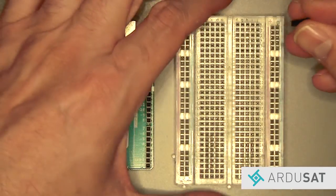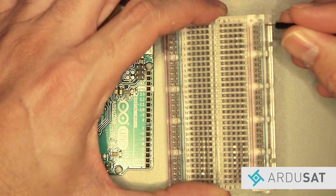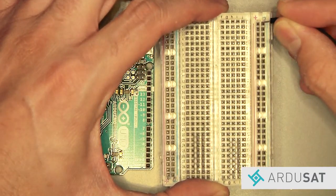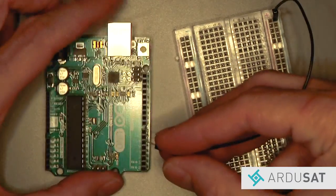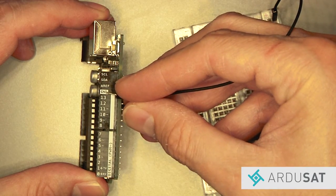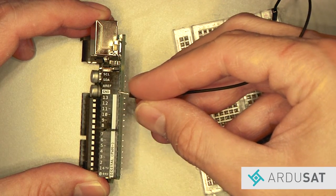Take one end of a black jumper wire and put it into the negative rail on your breadboard. Take the other end of the wire and plug it into one of the ground pins on the Arduino.